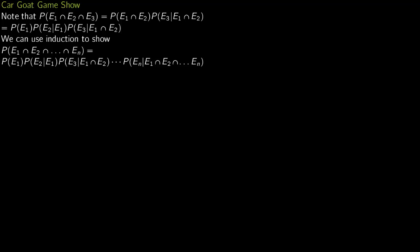Now we talk about this famous problem of a car goat game show. Before we start, let us focus on this formula first. You can write the probability of E1 intersection E2 intersection E3 as probability of E1 intersection E2 times probability of E3 given E1 intersection E2. This follows from the formula that probability of A intersection B is probability of A given B times probability of B.